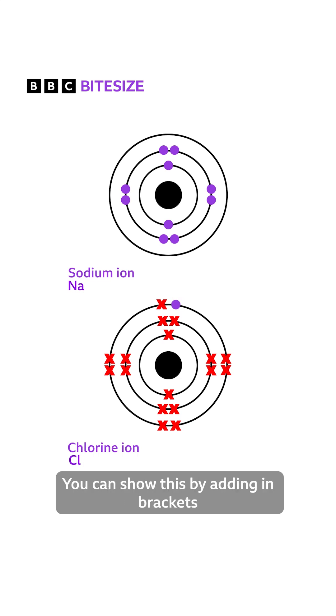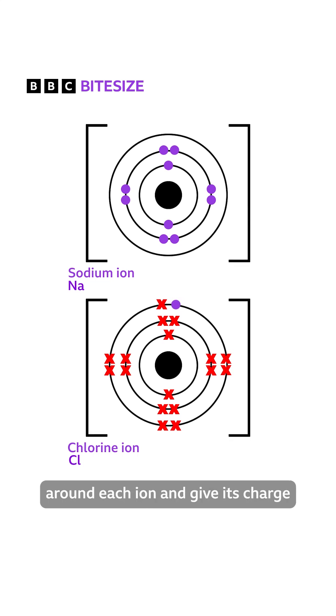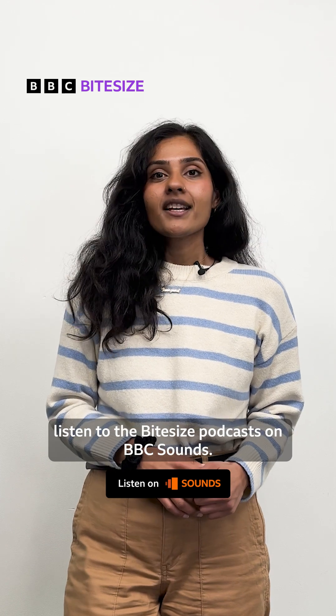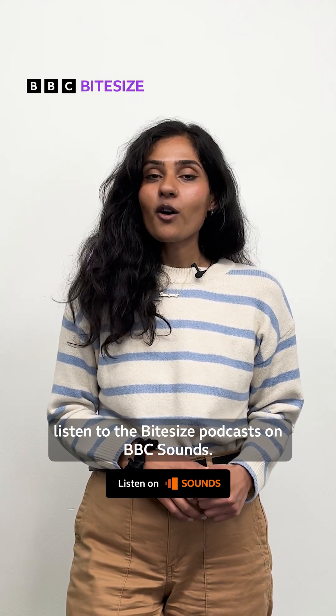You can show this by adding brackets around each ion and giving its charge with a plus for positive and a minus for negative. For more help with your GCSE chemistry exams, listen to the Bitesize podcast on BBC Sounds.